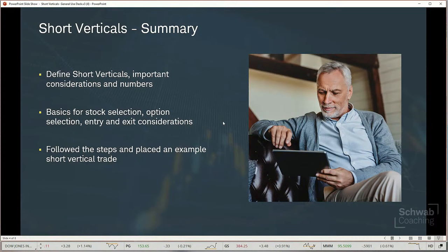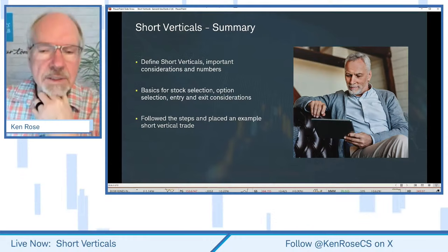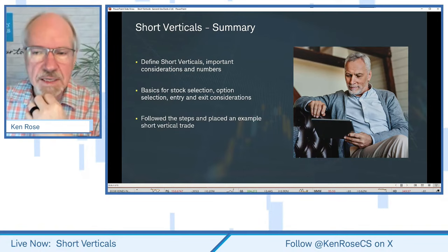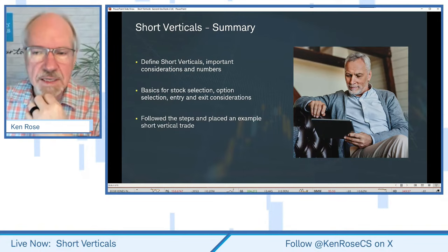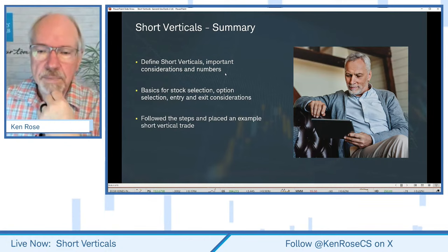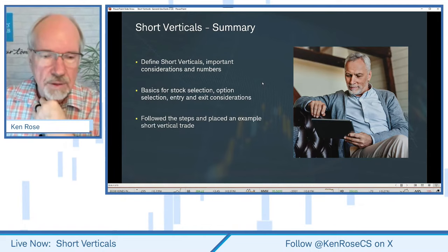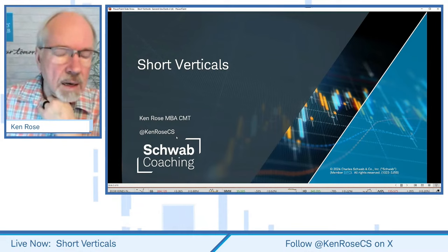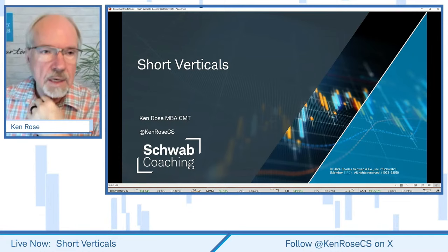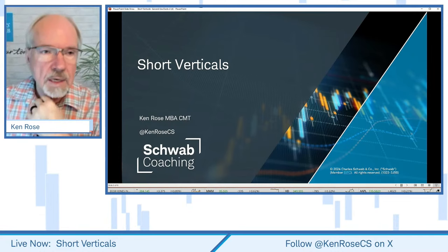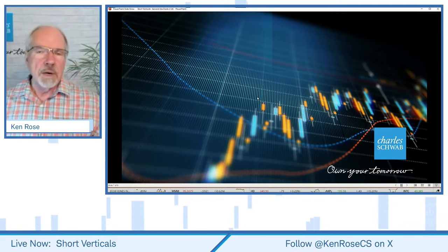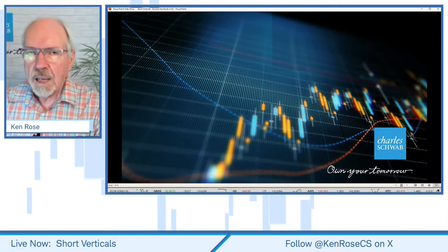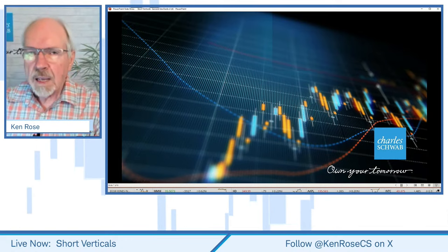Let's go ahead and wrap things up for today. We talked about options and earnings — what we can do to avoid all the volatility of earnings, some of those big moves that hit us like a torpedo and sink our boats. One thing we can do is just not trade individual stocks and instead look at trading some of the indexes. We talked about some unique characteristics of those indexes, including European expiration and cash settlement. You can follow me on X, formerly Twitter, at KenRoseCS. Also, a big thanks to Mike for handling all the questions. Circle your calendar for Monday at 2 p.m. Eastern — Mike teaches an excellent covered calls and short put session. Thanks for joining us for Short Verticals. Best of success in your investing, and we'll see you next time!